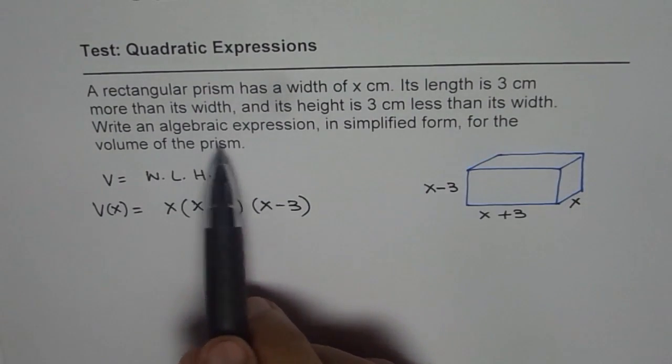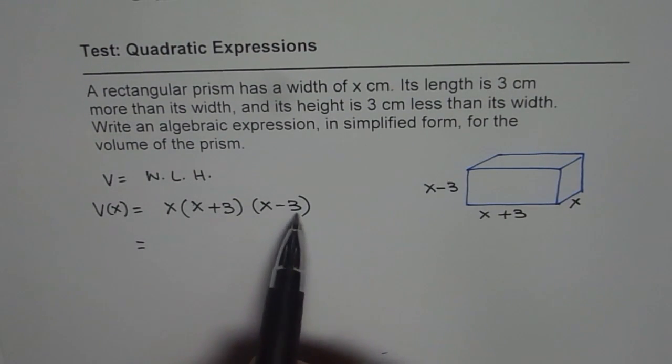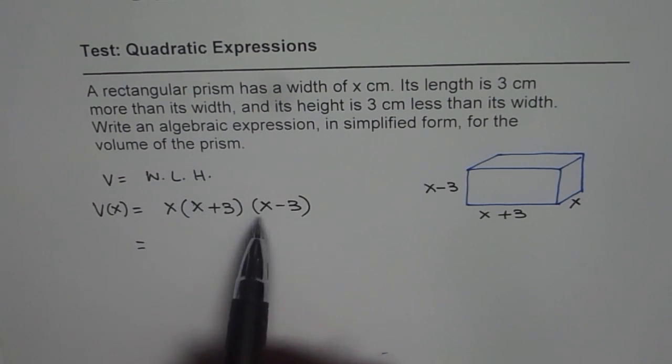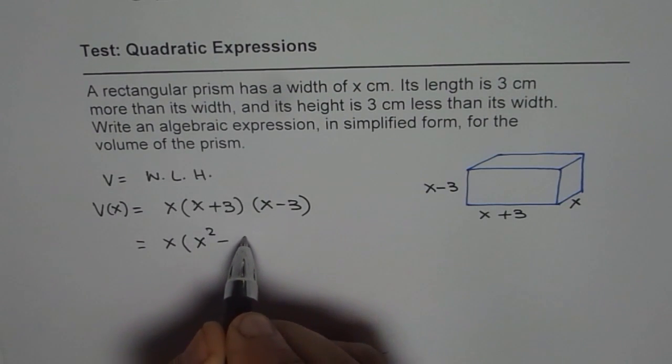Now we have to write in simplified form. Let's expand it. Now it is a good idea to expand x plus 3 and x minus 3 first, as you know sum and difference will give you difference of squares. So we can get this as x times x squared minus 9.